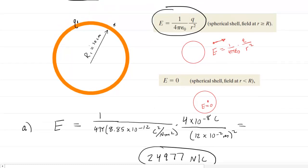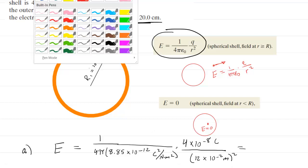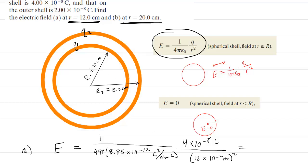Now in part B, we are calculating the field at a distance of 20 centimeters. We have to notice that we're going to need to put back in the other shell, so let's do that. There we have it.